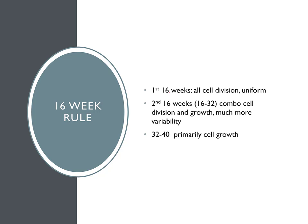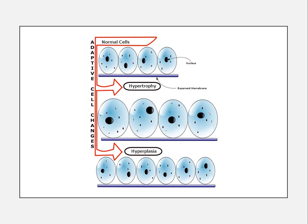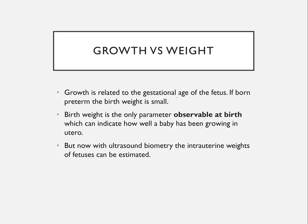We need to learn about intrauterine growth, which generally follows a 16-week rule. In the first 16 weeks, all cell divisions are uniform. In the second 16 weeks, there is cell division plus growth. In the third 16 weeks, it is mainly growth of the cells. Initially, cells increase in size — called hypertrophy — and then increase in number, called hyperplasia. Growth is therefore related to gestational age.